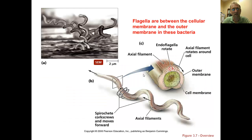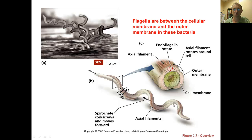Certain spiral bacteria called spirochetes have a single flagella, but it's not immediately obvious when we look at the microorganism under the microscope. The flagella is actually very tightly wrapped around the surface of the microorganism, becoming part of its surface. ATPase still causes this structure to spin along the surface, resulting in a corkscrewing motion as the microorganism moves through its environment.